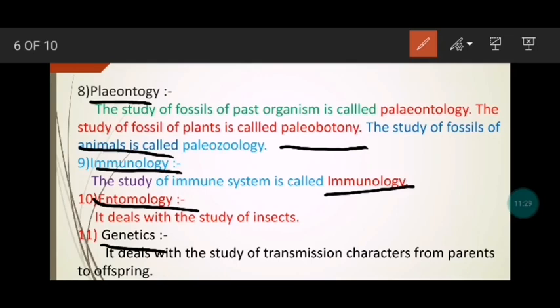The eleventh branch is genetics. Genetics is derived from genes. Genes transfer characters from parents to their offspring. یعنی کہ والدین کی خصوصیات ان کی اولاد میں منتقل ہوتی ہیں۔ Genetics deals with the study of the transmission of characters from parents to their offspring.